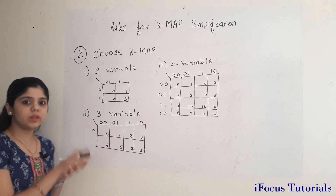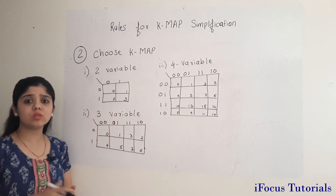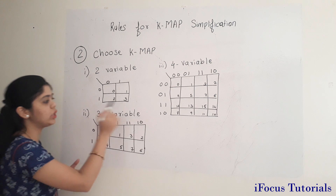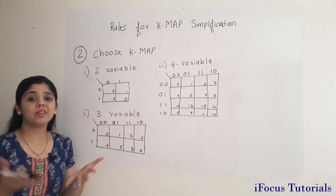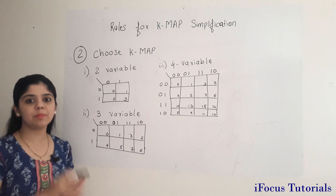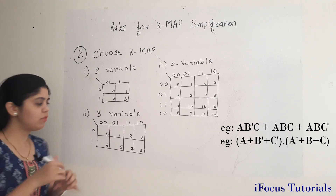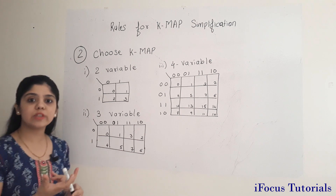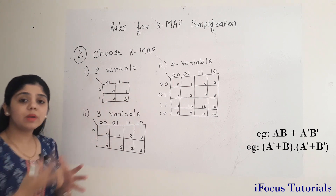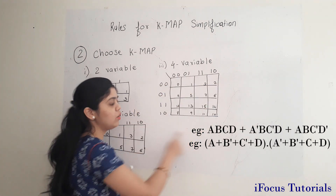The second step is to choose the KMAP properly. The KMAP can be of 2, 3, or 4 variables. If your expression uses 3 alphabets like A, B, C then you need a 3-variable KMAP. If it uses only 2 variables, you need a 2-variable KMAP. If it uses 4 variables like A, B, C, D then you need a 4-variable KMAP.